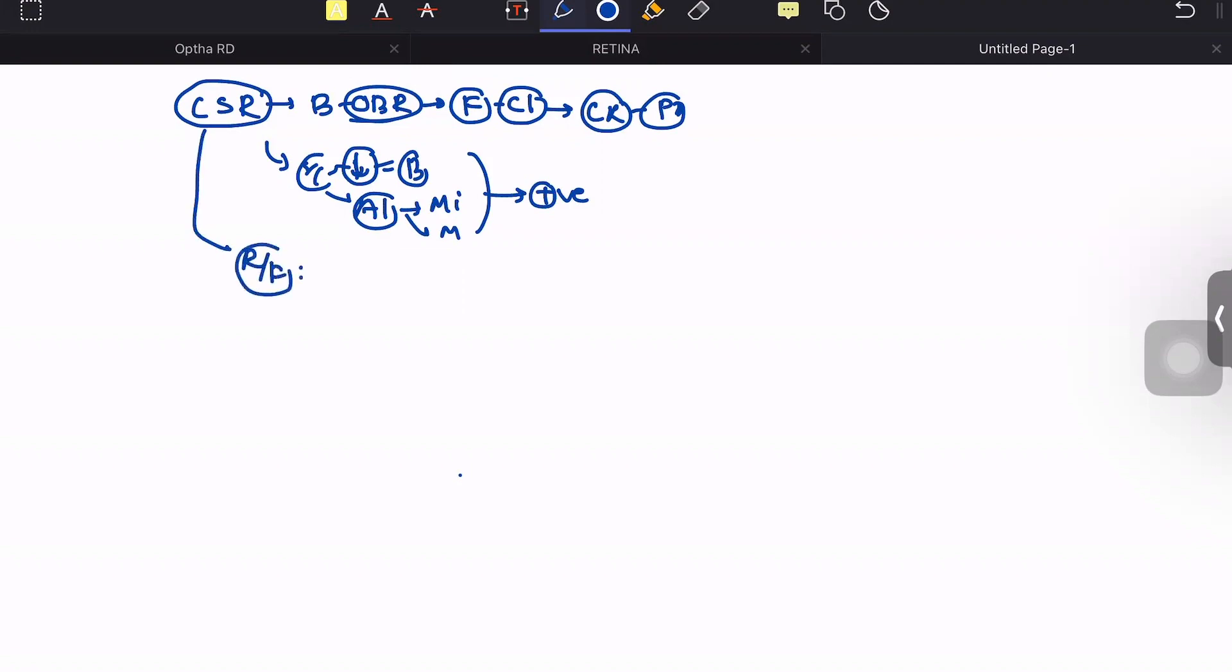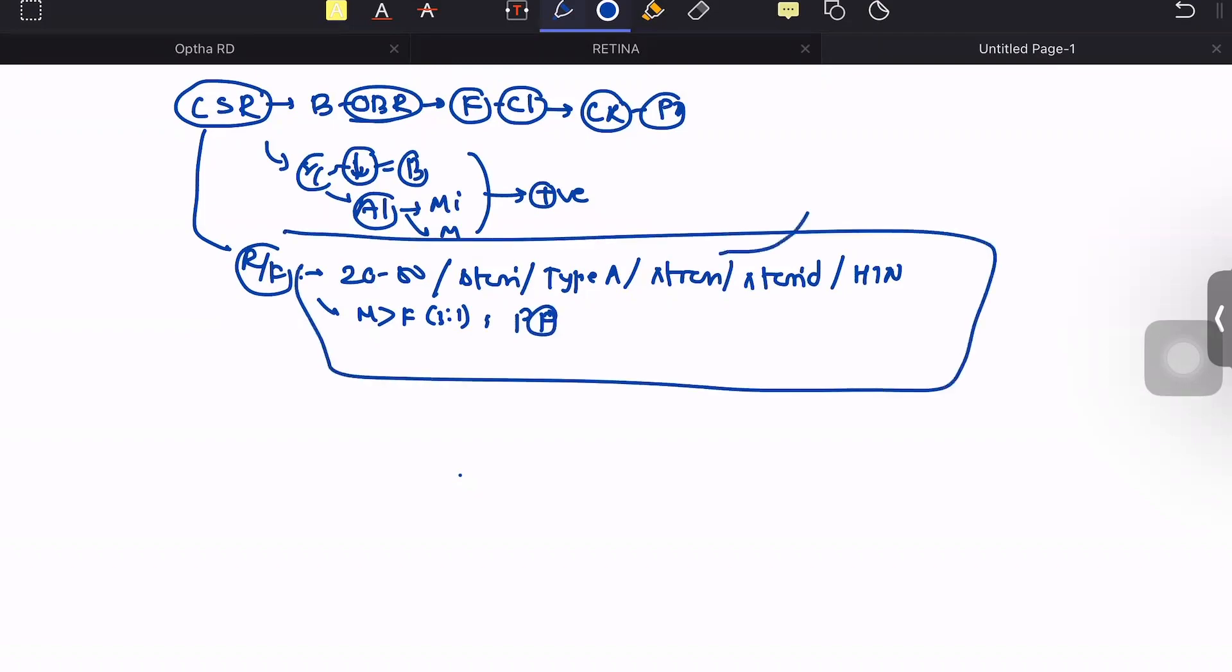This disease is usually seen in patients with risk factors including age between 20 to 50 years, steroid use, type A personality, stress, and hypertension. It is more common in males with a ratio of 3:1, but pregnant females also have high risk.